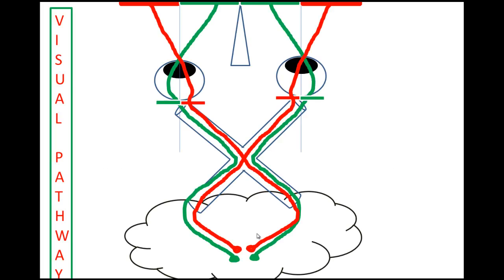If the P100 latency is delayed only with right eye stimulation but normal with left eye stimulation, the problem most likely is anterior to the chiasm on the right side — it could be in the retina, the optic nerve, or anywhere along that pathway. If there was pathology at the optic chiasm or beyond, the P100 would be delayed whether you stimulate with the left eye or the right eye. If somebody has a pathology at the level of the optic tract, you will have an increase in latency of P100 whether you stimulate the right eye or the left eye, because the optic tract carries fibers from both sides.